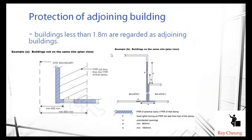Another requirement is protection against adjacent buildings. Normally, we consider a building to be adjoining if it is within 1.8 meters of another building. If two buildings are that close, we need to provide fire-resistant wall protection — a fire-rated wall between them.